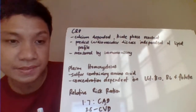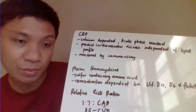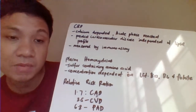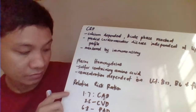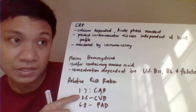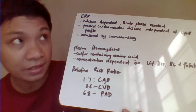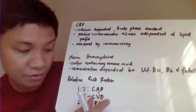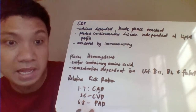Plasma homocysteine is a sulfur-containing amino acid whose level is highly correlated with vitamin B12, B6, and folic acid. The relative risk ratios associated with elevated homocysteine are: 1.7 for coronary artery disease, 2.5 for cardiovascular disease, and 6.8 for peripheral arterial disease.